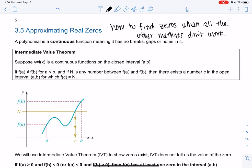So we're going to start with the theorem, and before we can do the theorem we need to make sure we understand what continuous means. A polynomial is a continuous function, meaning it has no breaks, gaps, or holes. So all polynomials are continuous. Not all functions are, but polynomials are.